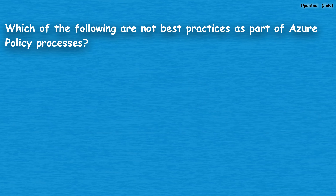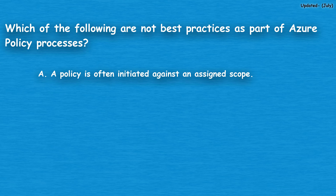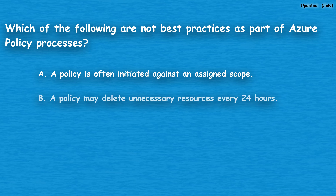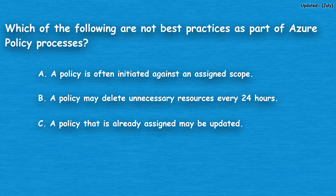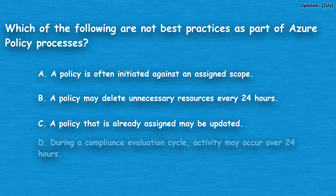The next question: which of the following are not best practices as part of Azure policy processes? Option A: a policy is often initiated against an assigned scope. Option B: a policy may delete unnecessary resources every 24 hours. Option C: a policy that is already assigned may be updated. Option D: during a compliance evaluation cycle, activity may occur over 24 hours.